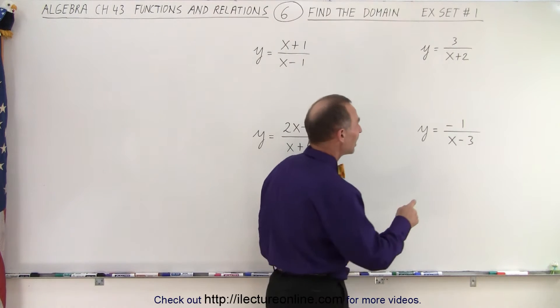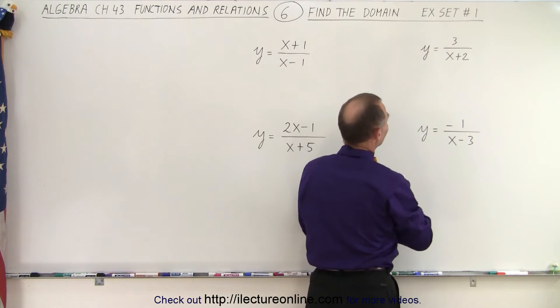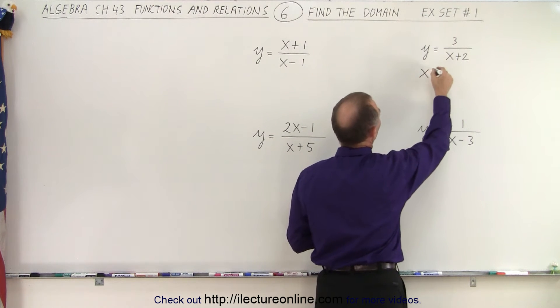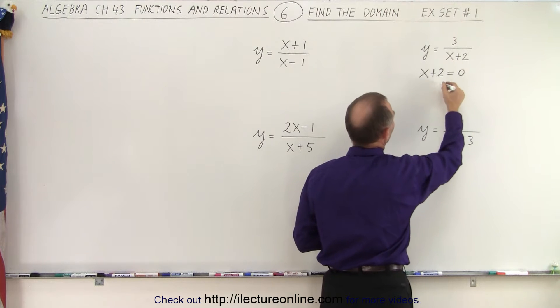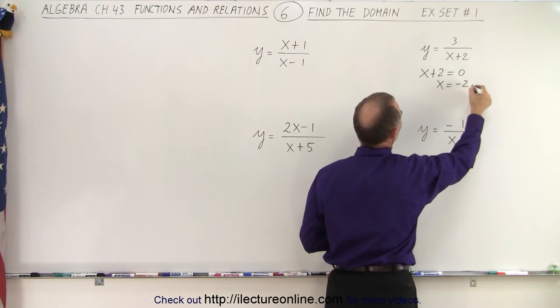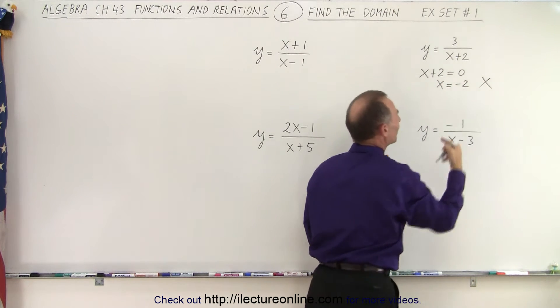So what we're going to do here is we're going to take each one of these denominators and simply say x plus two equals zero. Well, if that equals zero, we have x equals negative two, which means that this is a prohibitive value.